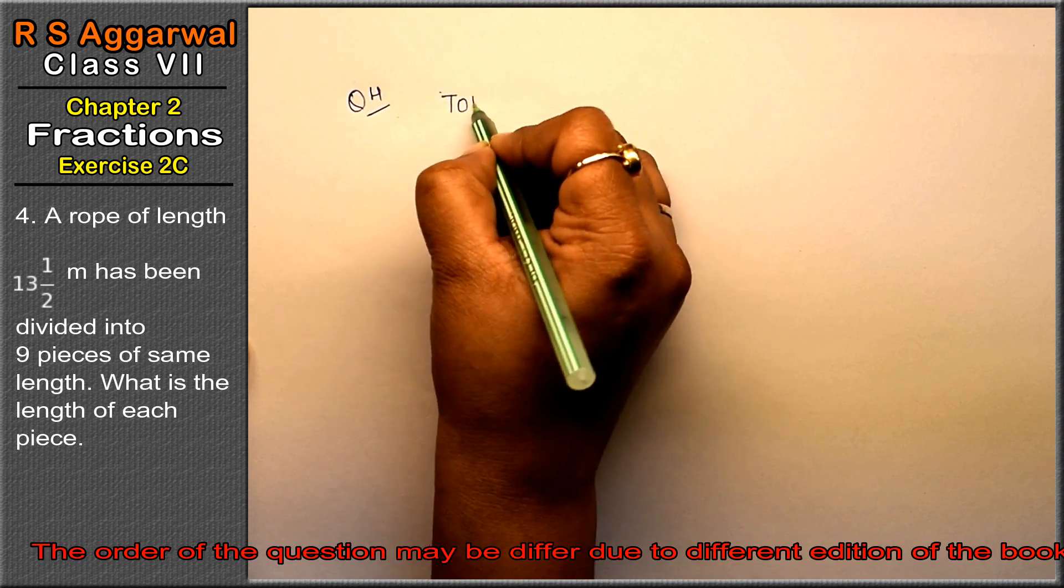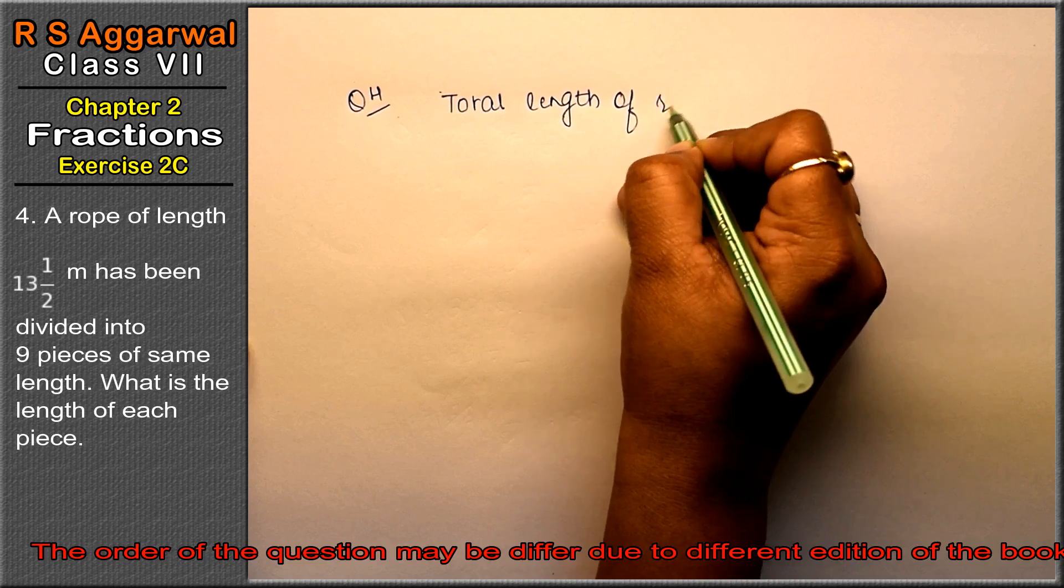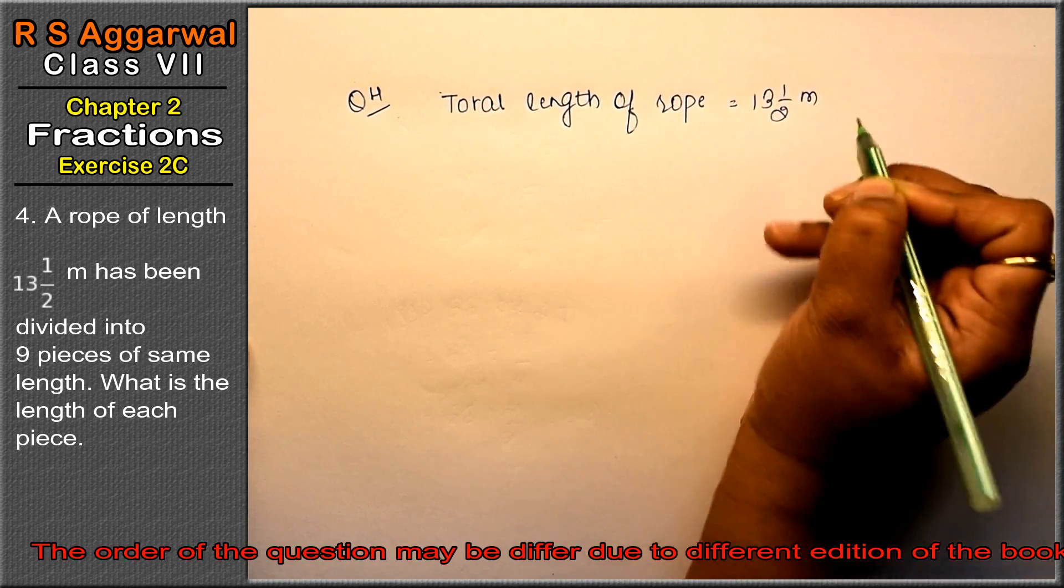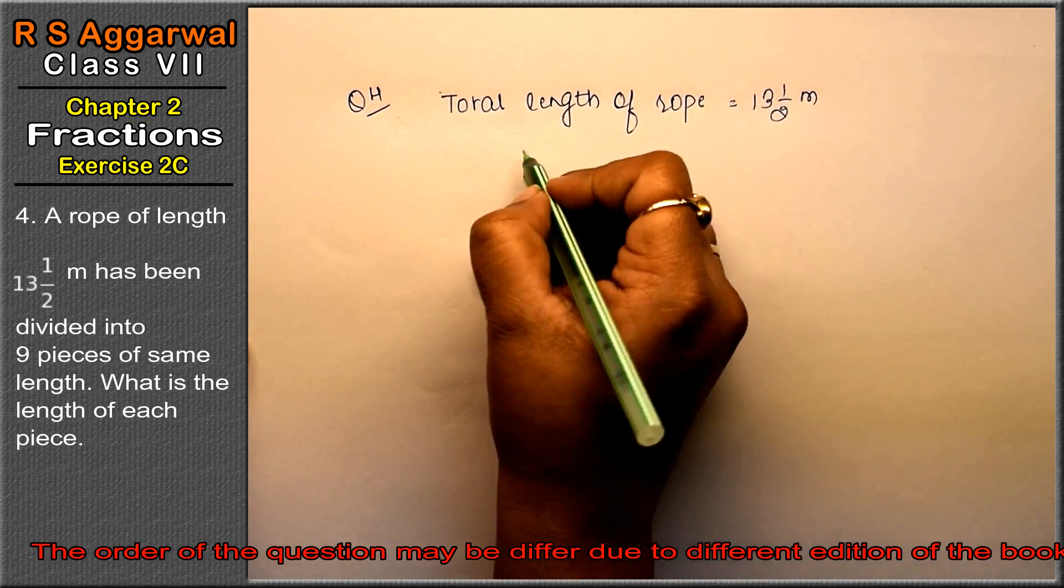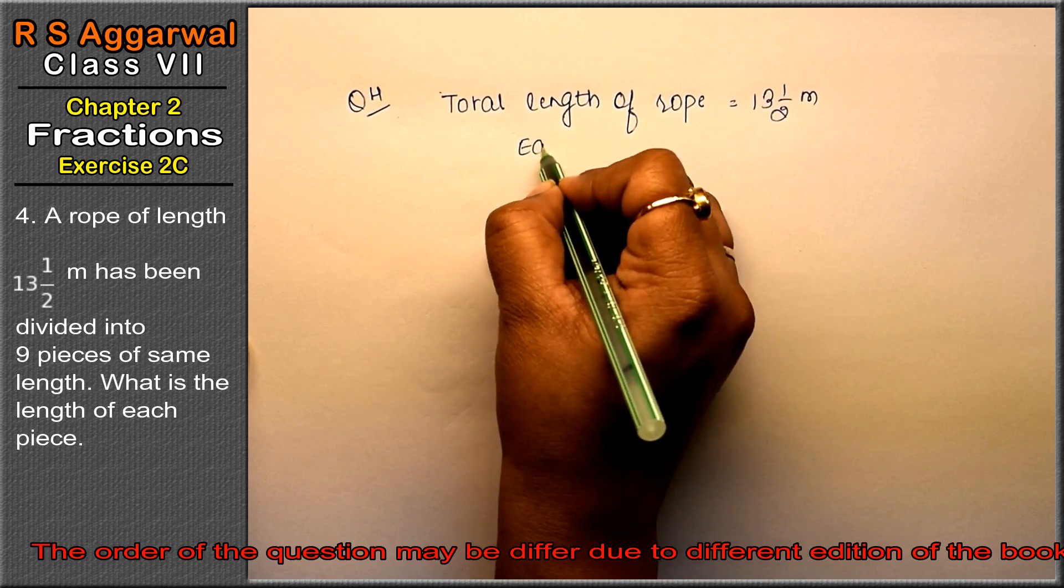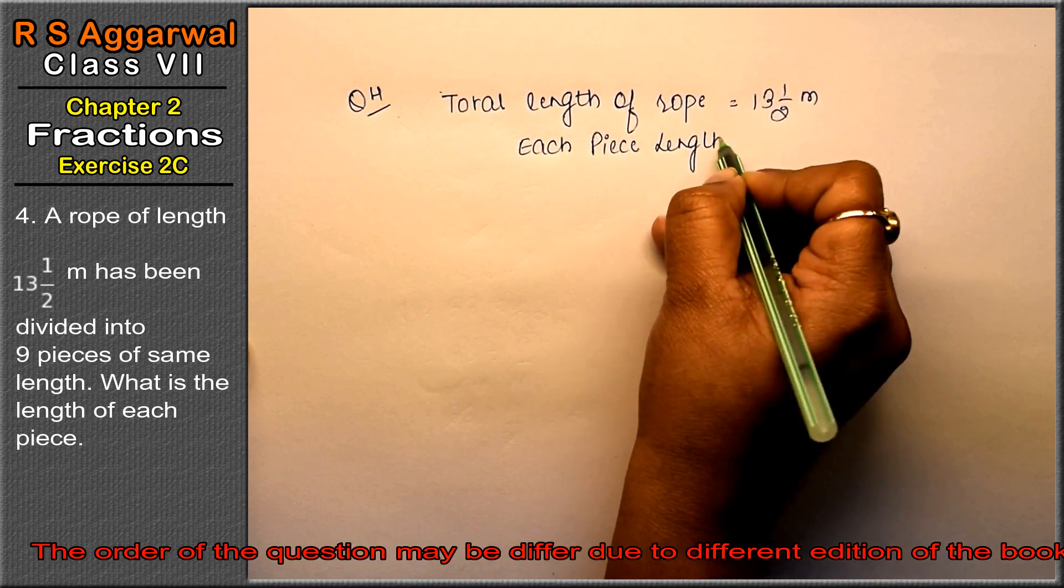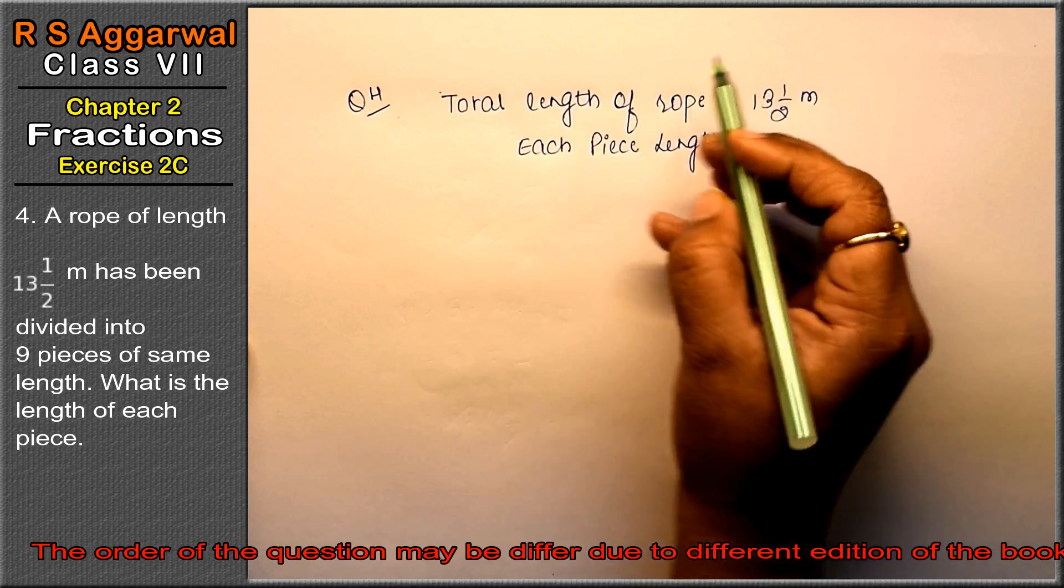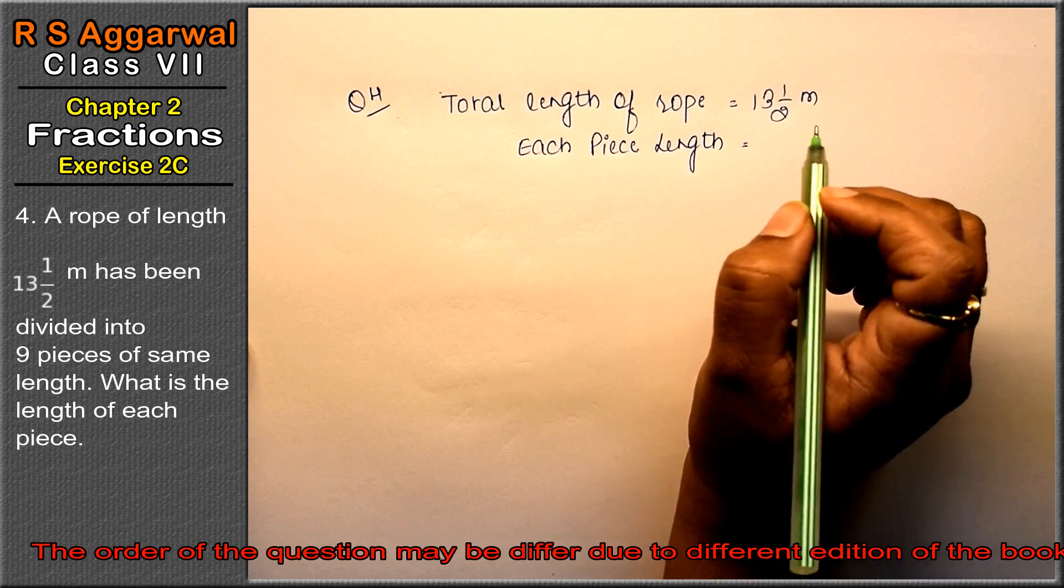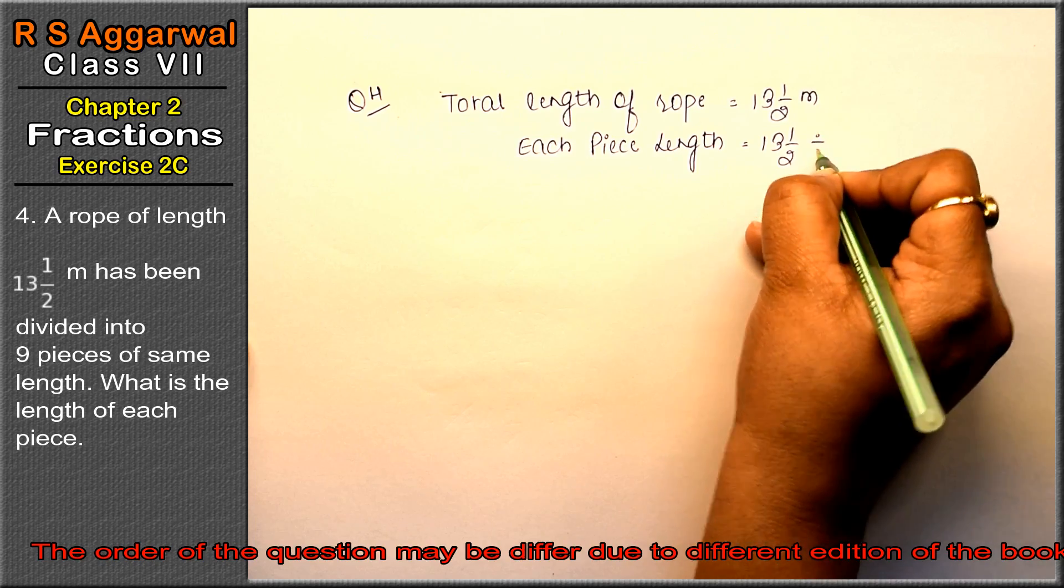We know total length of rope is equal to 13 whole 1/2 meters. Right, friends? We have to divide by 9. So each piece length is equal to total length divided by 9. We divide by 9.